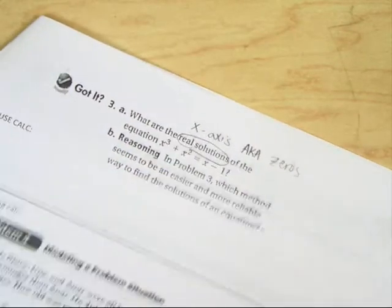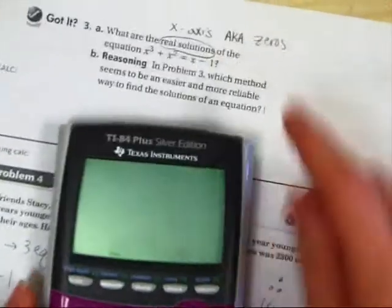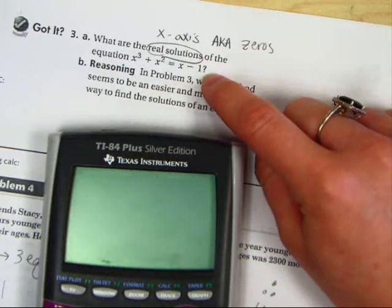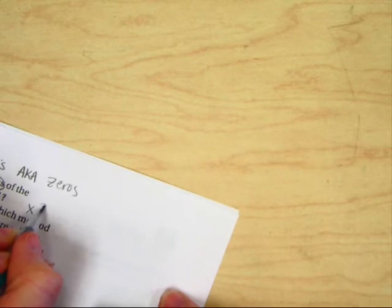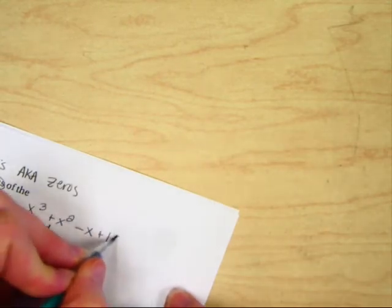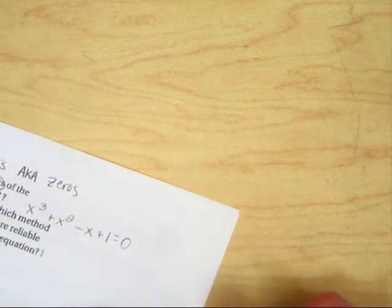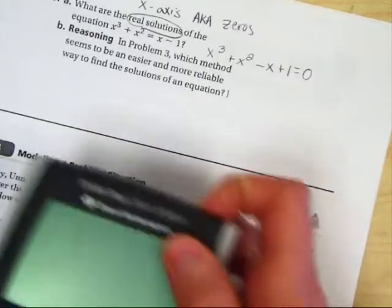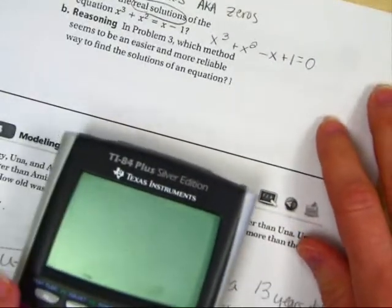The good news is, and got it number 3, we can use our calculator to help us find the real zeros. Just remember that if it asks you for the real solutions, it's asking you where it crosses the x-axis, and those are called zeros, okay, so a.k.a. are also known as zeros. All right, so let's go ahead, get our calculators, and put this in. But wait, before you put it in, set it equal to zero.